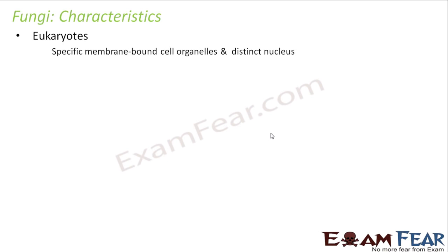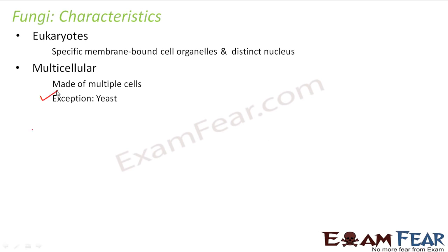Fungi are eukaryotes, meaning they have specific membrane-bound cell organelles and a distinct nucleus. They are multicellular — made up of multiple cells — however, yeast is an exception as it is a unicellular fungi. So we see a progression: Monera were prokaryotes and unicellular, Protista were eukaryotes but still unicellular, and now fungi are eukaryotes and multicellular. As we go ahead with each kingdom, the complexity of organisms increases.